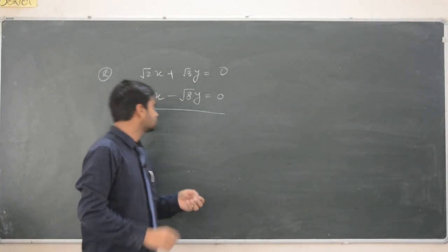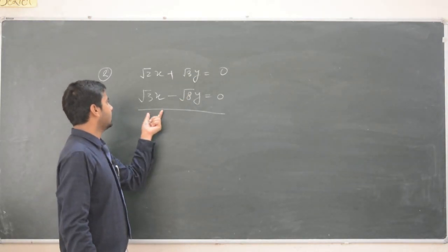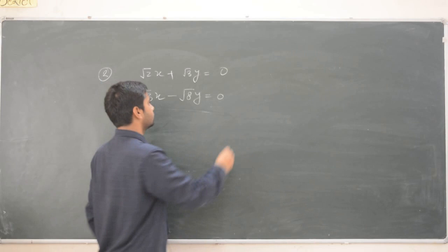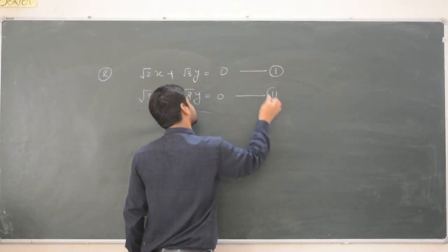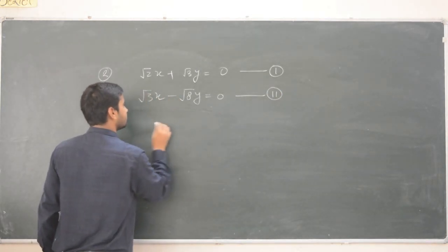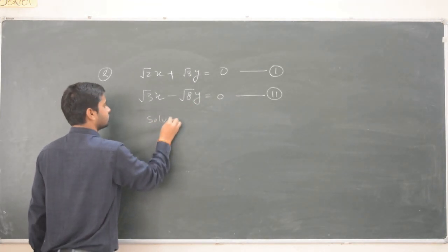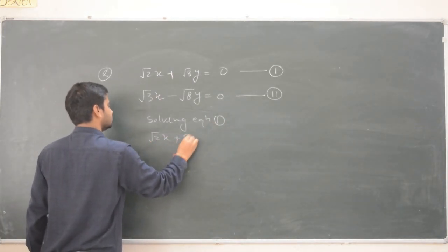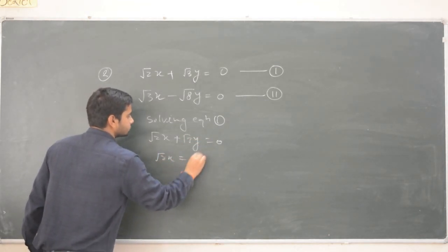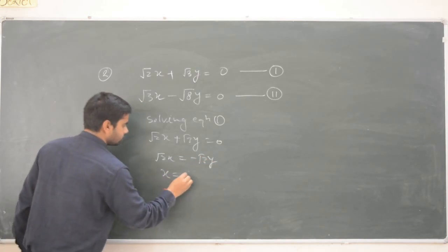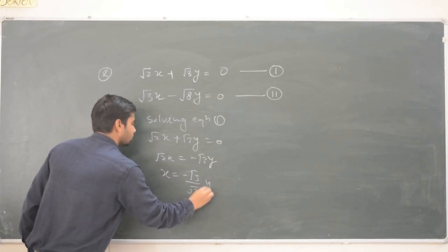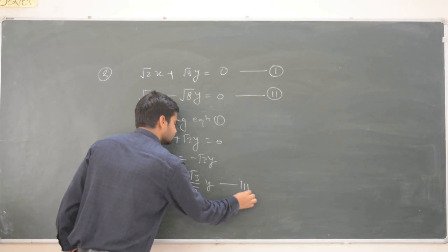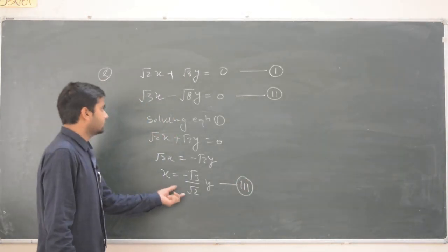Now we have another problem: root 2·x plus root 3·y equal to 0 (equation 1) and root 3·x minus root 8·y equal to 0 (equation 2). We want to find x and y. Solving equation one: root 2·x equal to minus root 3·y, so x equal to minus root 3 divided by root 2 times y. Mark this as equation 3.